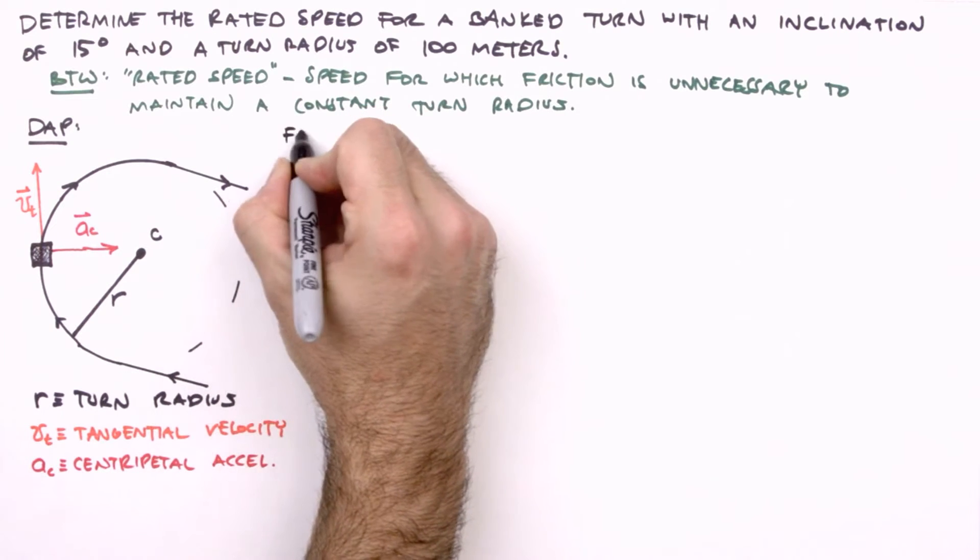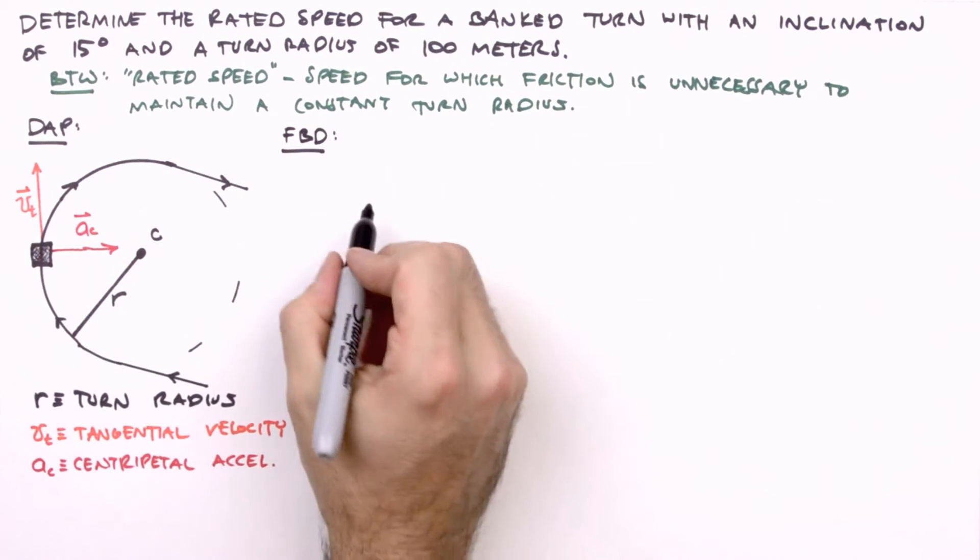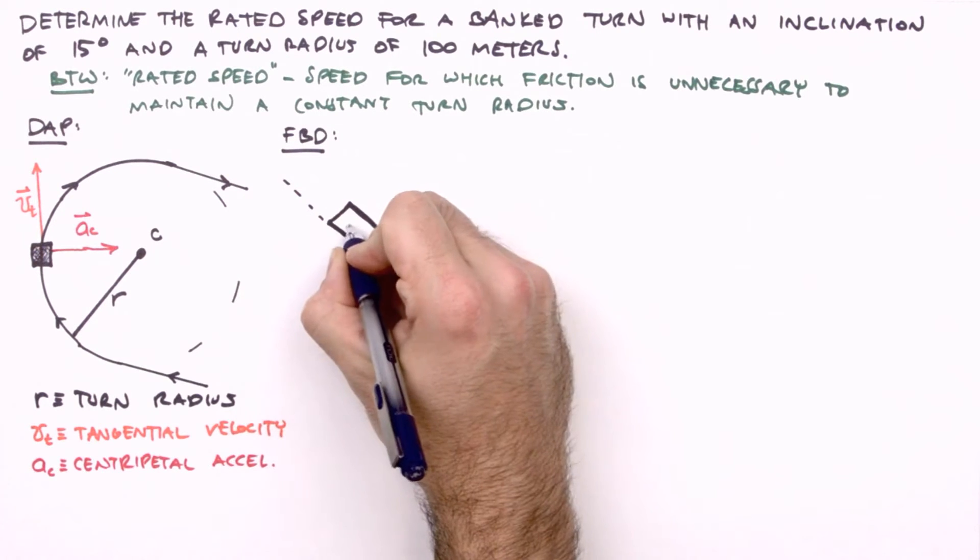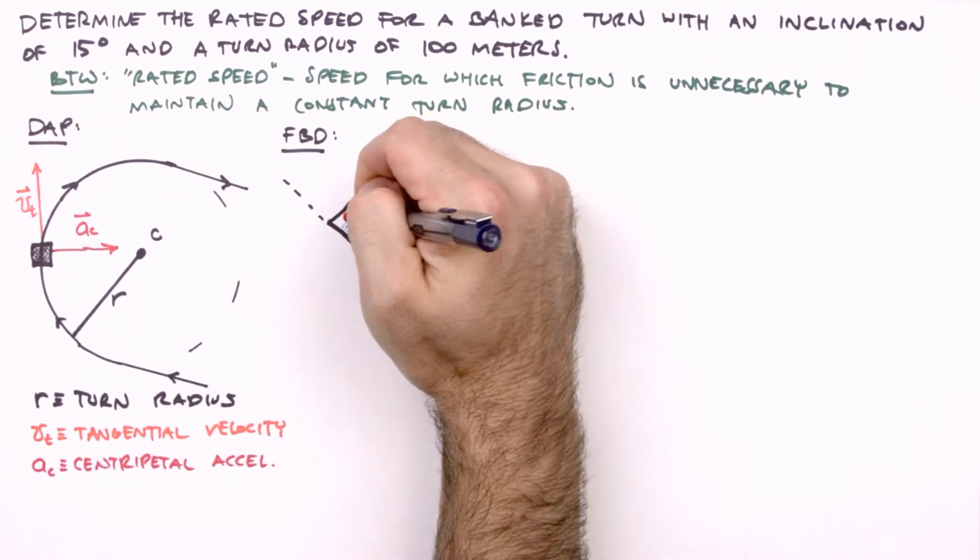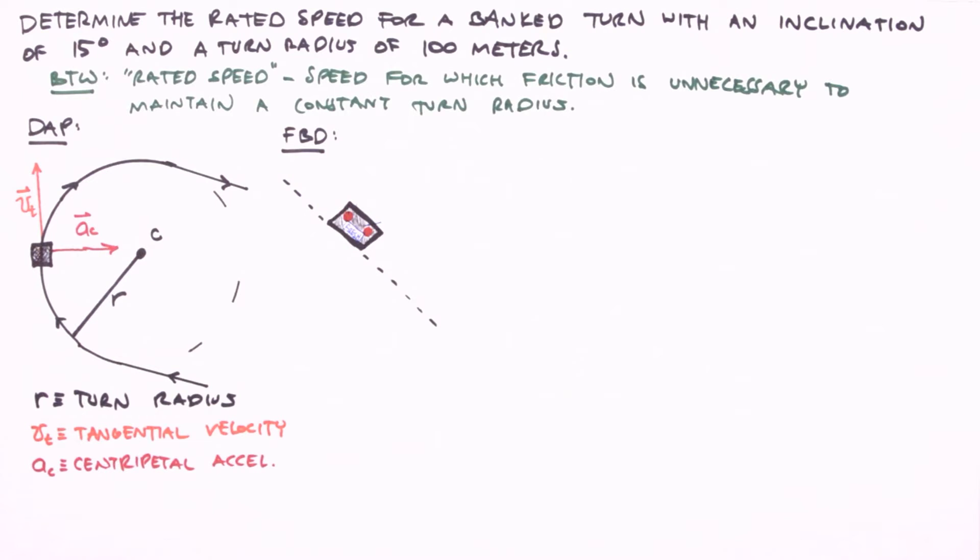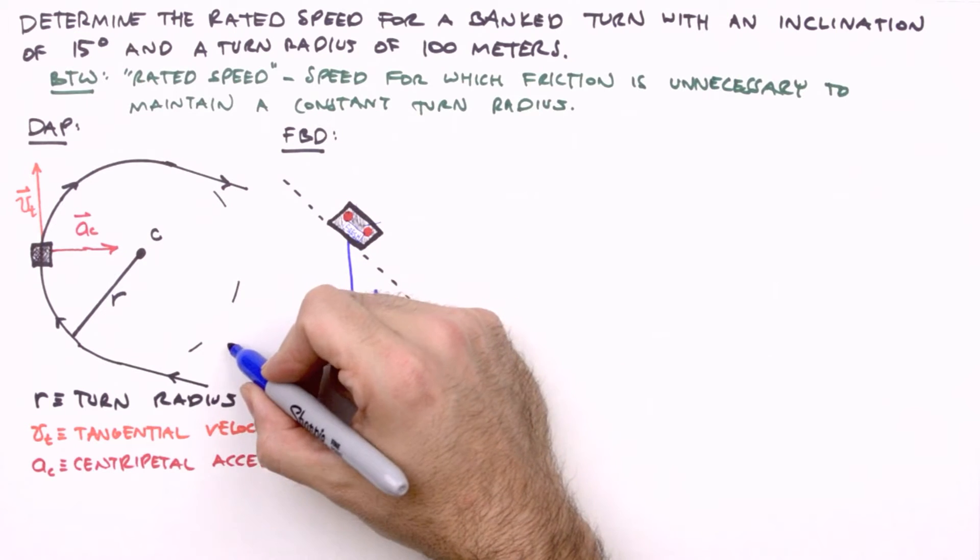Since we're moving clockwise around the turn, the road, as well as the vehicle on the road, will be inclined clockwise as well. Our FBD, of course, shows our vehicle here from behind. To make this view a little clearer, we'll give the vehicle a license plate. And maybe some taillights will help. Or maybe it just looks like an angry robot now. Anyway, the two forces acting on our vehicle are its weight and the normal force applied to the vehicle by the road.